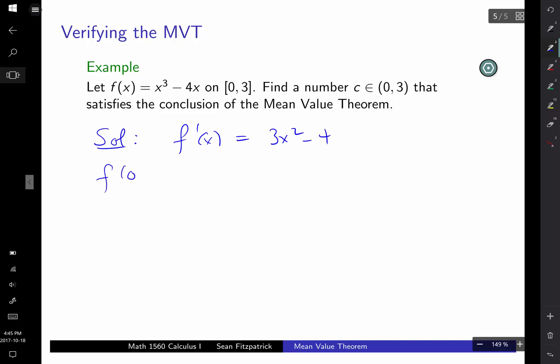So what's f(0)? And f(0) is 0. f(3) is 3 cubed, 27, minus 4 times 3 minus 12 is 15. So f(3) minus f(0) over 3 minus 0 is 15 over 3 equals 5. And I want that to be equal to f'(c), which is 3c^2 minus 4. And so that tells me that 3c^2, add 4 to both sides, should be 9. c^2 should be 3.